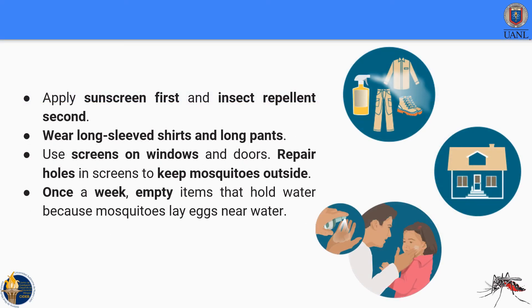Apply sunscreen first and insect repellent second. Wear long-sleeved shirts and long pants. Use screens on windows and repair holes in screens to keep mosquitoes out. Once a week, empty items that can hold water, because mosquitoes lay their eggs near water. All of these tips are really helpful if you want to prevent contagion of any type of dengue.